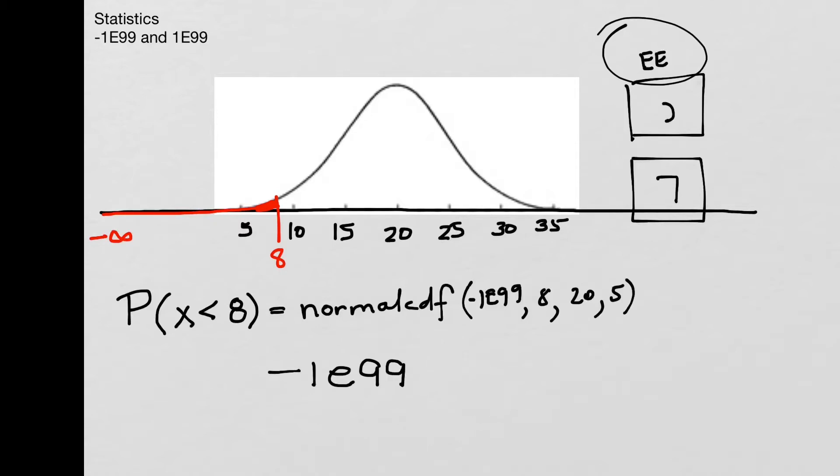Sometimes people will type in negative 1, and then a lowercase e, 99. And so what this is actually equal to, if you just type that in and press enter, you'll see that it's equal to negative 269.109901.